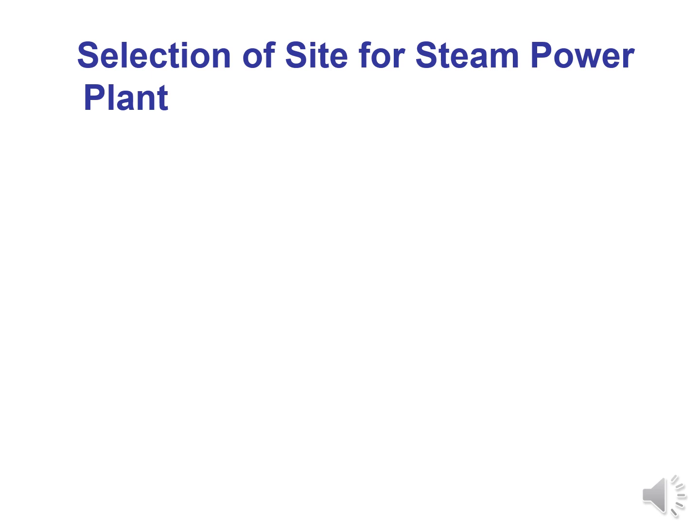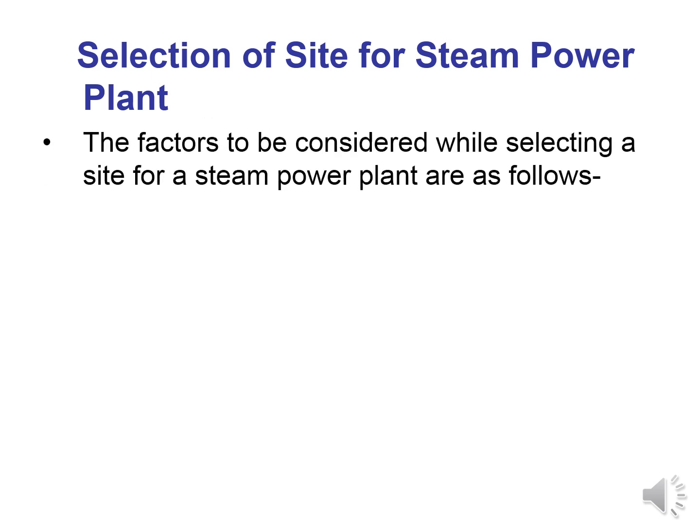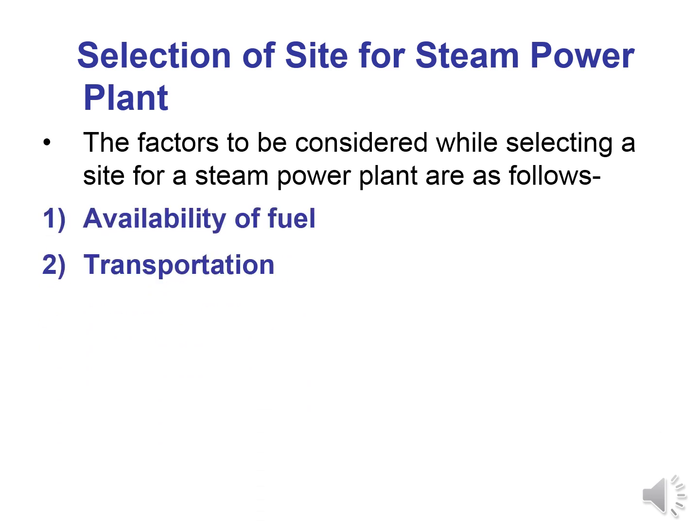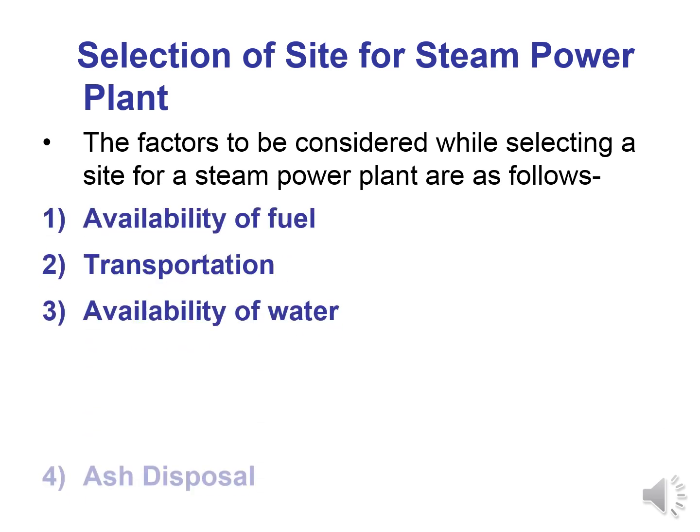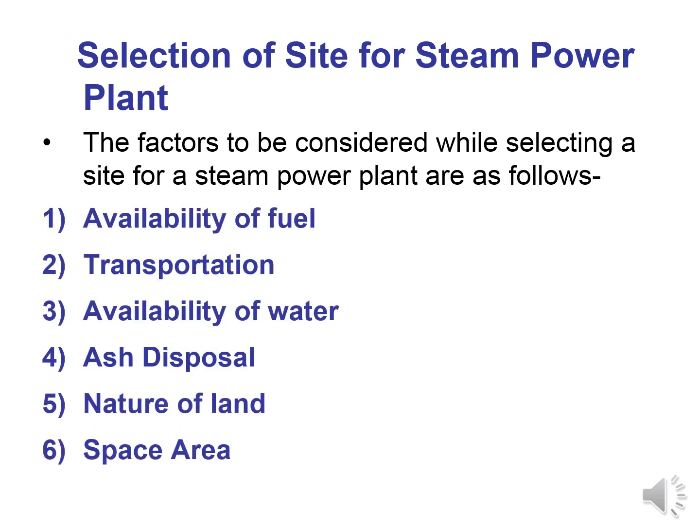Steam power plants are suitable for large-scale power generation. We will see the factors for site selection one by one, as we cannot set up a steam power plant just anywhere. The requirements include availability of fuel, transportation, availability of water, ash disposal, nature of land, and space area.